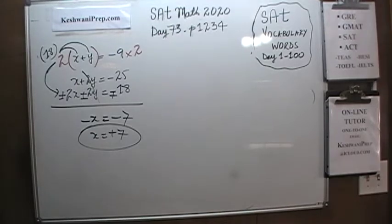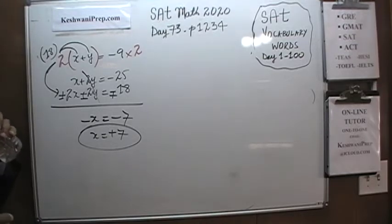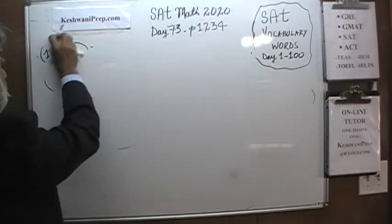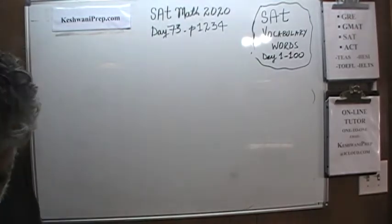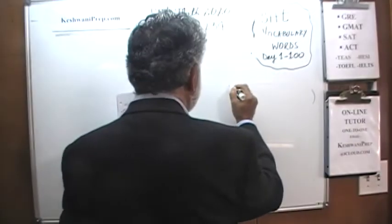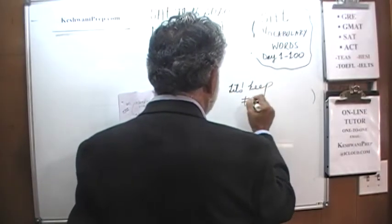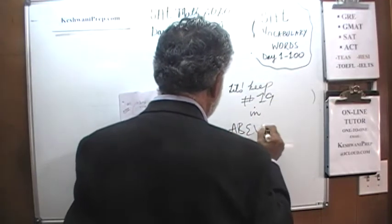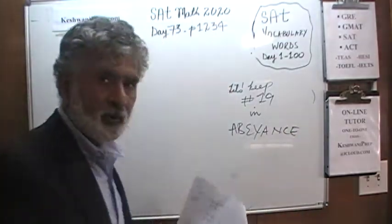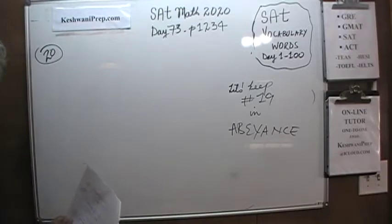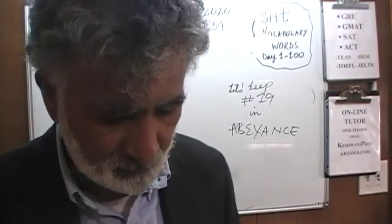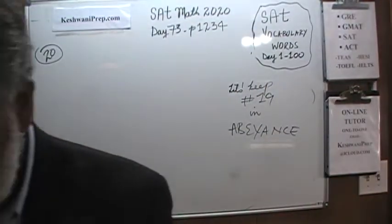And that was number 18. Let's move on to the next one. Number 19 is the next one — we are going to keep number 19 in abeyance. Let's learn a vocab word, shall we? We are going to go to number 20. In other words, we are going to keep number 19 aside for the time being. We will get to it in a little bit. That's exactly what abeyance means — to keep something in abeyance means leave it aside for the time being.